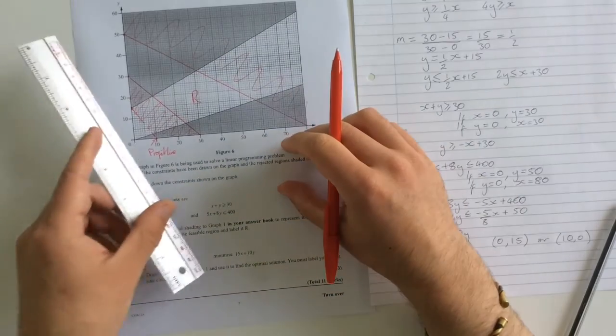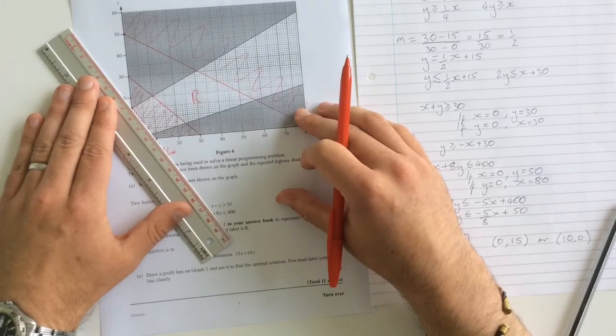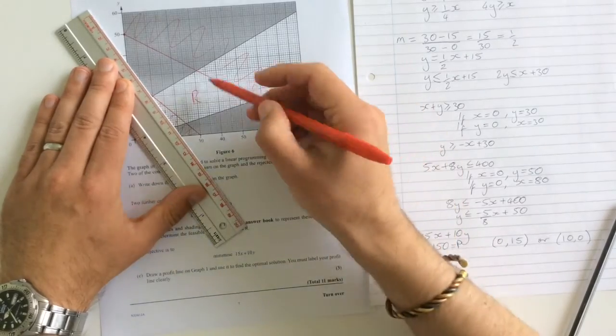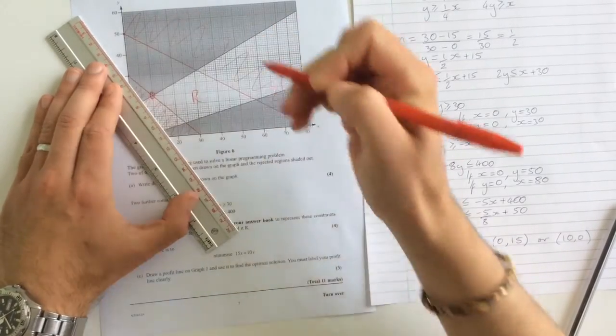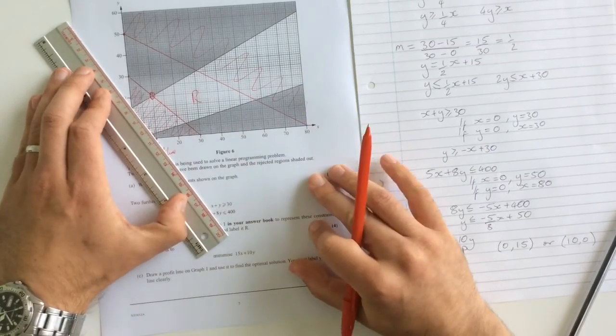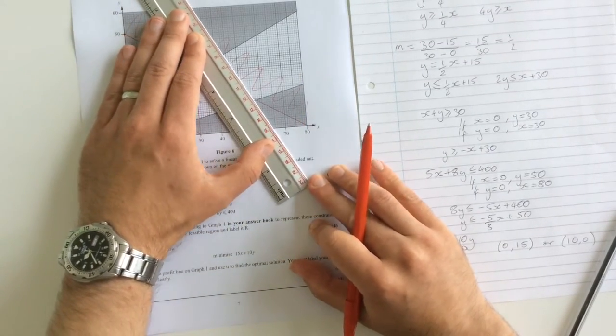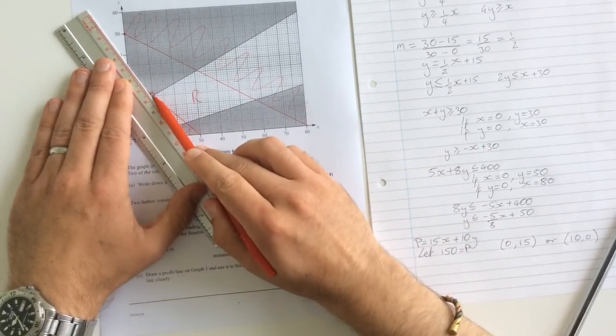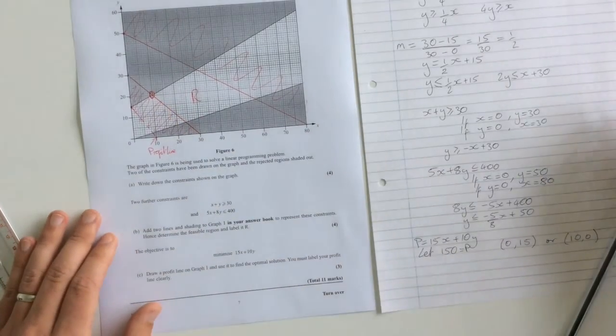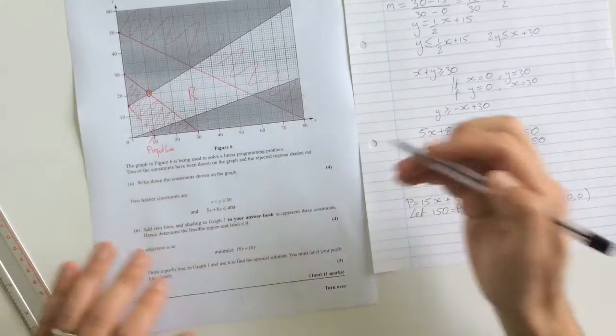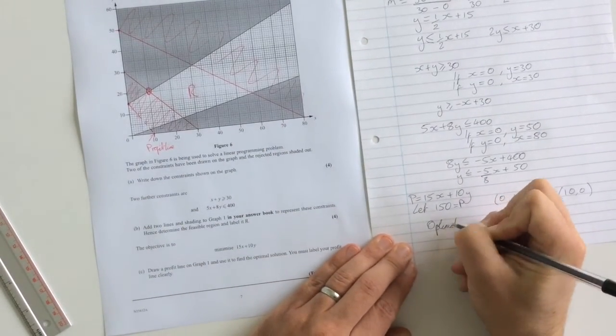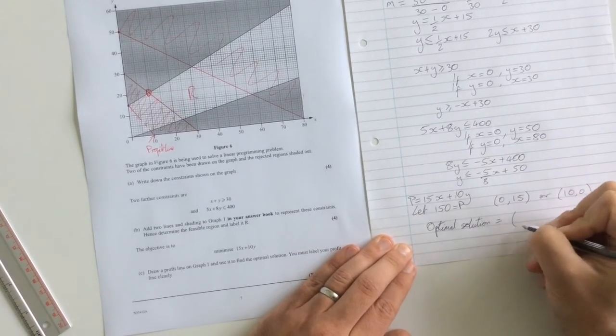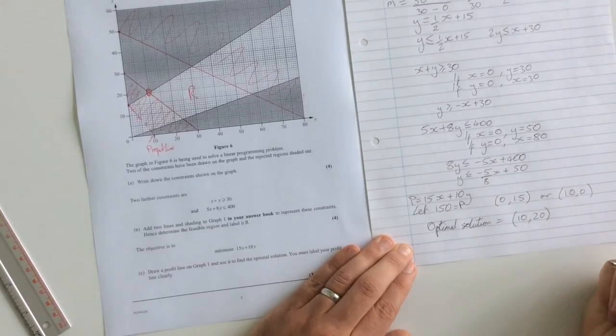So we're trying to minimize that, which means that we're going to move this graph, keeping the gradient the same, and we're going to identify the first point that we come to of this feasible region. This is the first point that we come to. If we were trying to maximize it, we would keep going until we found our very last position, which would be this one. But minimizing, we're going to find the first one, which is that one there. So this is the optimal solution. And the optimal solution here corresponds very nicely to having integer values. Optimal solution equals, what is it, x is 10 and y is 20. Nice and straightforward.